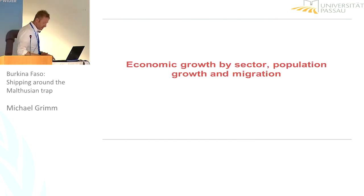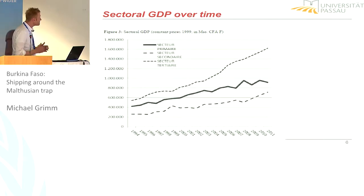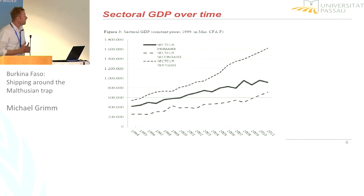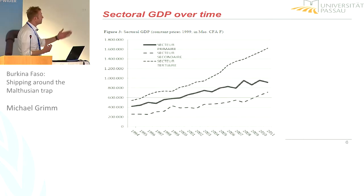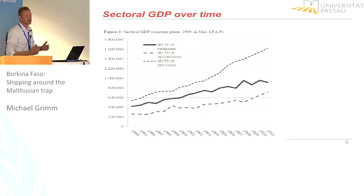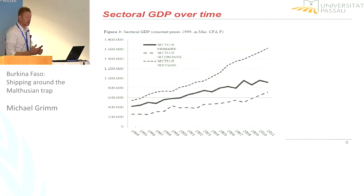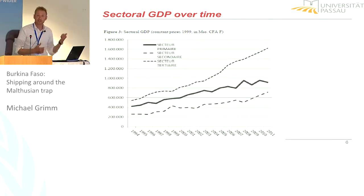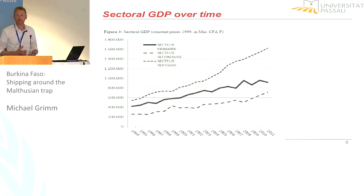So let me start with sectoral growth. This is sectoral GDP in the aggregate — not in per capita terms — for the three main sectors: primary, secondary, and tertiary. You'll see growth across all three, in particular in the tertiary sector, and also a bit in the primary and secondary. But of course, what we are interested in is how does it look in per capita terms?